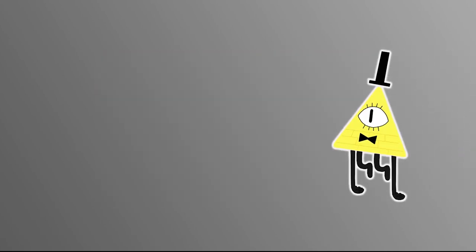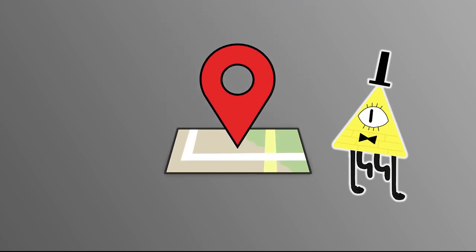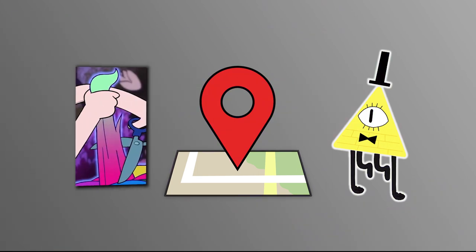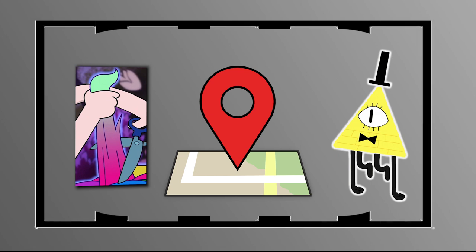In Scenario 2, Bill Cipher is lured to a location, and the thaumaturgical spell used by the Pines family to protect the Mystery Shack, the one including unicorn hair as a component, is used to seal Billy Boy into a single location. We build our remote containment site around that.